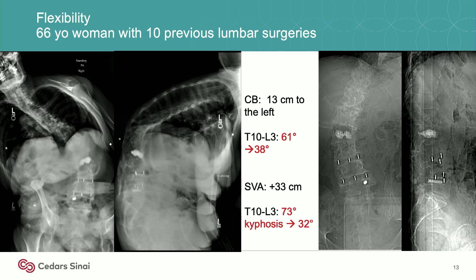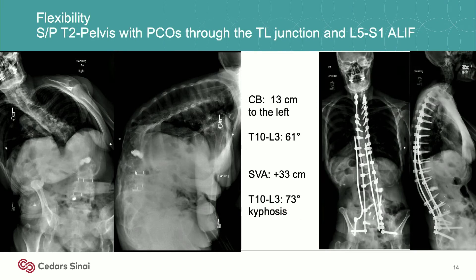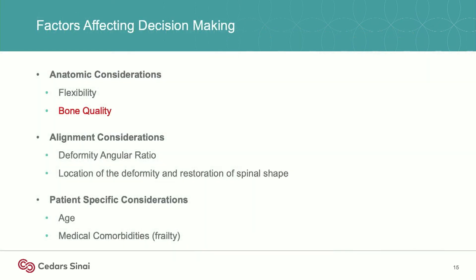Her kyphosis goes from 73 to 32, so just lying down you've gotten a ton of correction already. You can help that out a little more with some osteotomies. She was a relatively older, sicker patient and we were able to get her corrected just with PCOs through her TL junction. Not a perfect correction, but one surgery, relatively minimal blood loss, out of the hospital pretty quickly, and she's been happy with her outcome about a year and a half out.